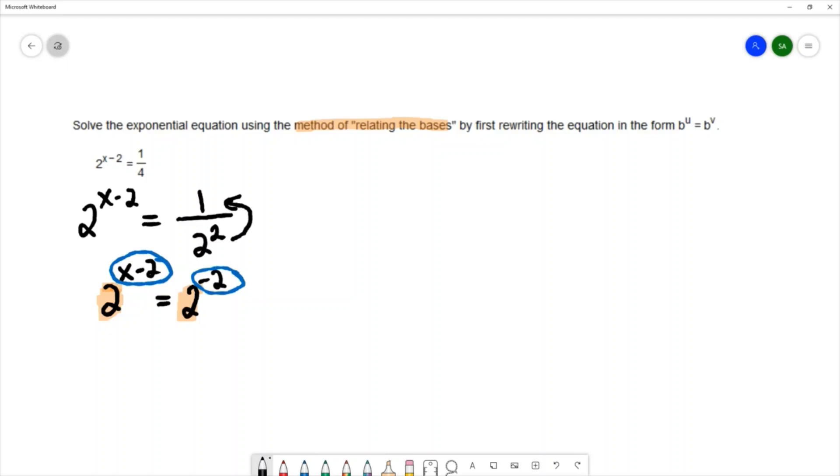To be the exponent on the left of x minus 2 equal to the exponent on the right of negative 2. Then we're going to solve the equation that we have left. I'm going to add 2 to both sides.